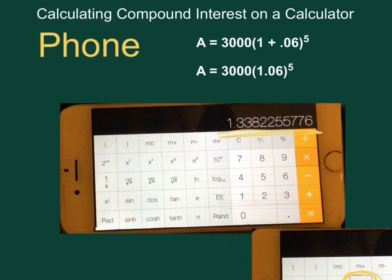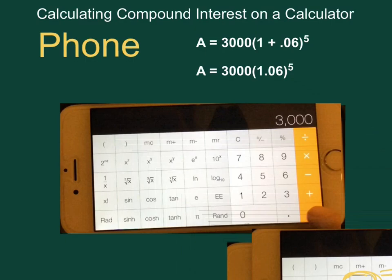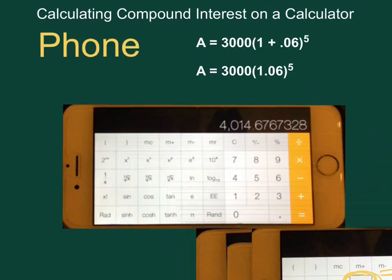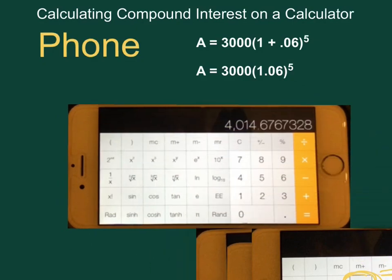And don't clear it or round it, just leave it in there, and then hit times your principal. So times 3,000, hit enter right here. And when you hit enter, you should come back up with that saying 4,014.68.